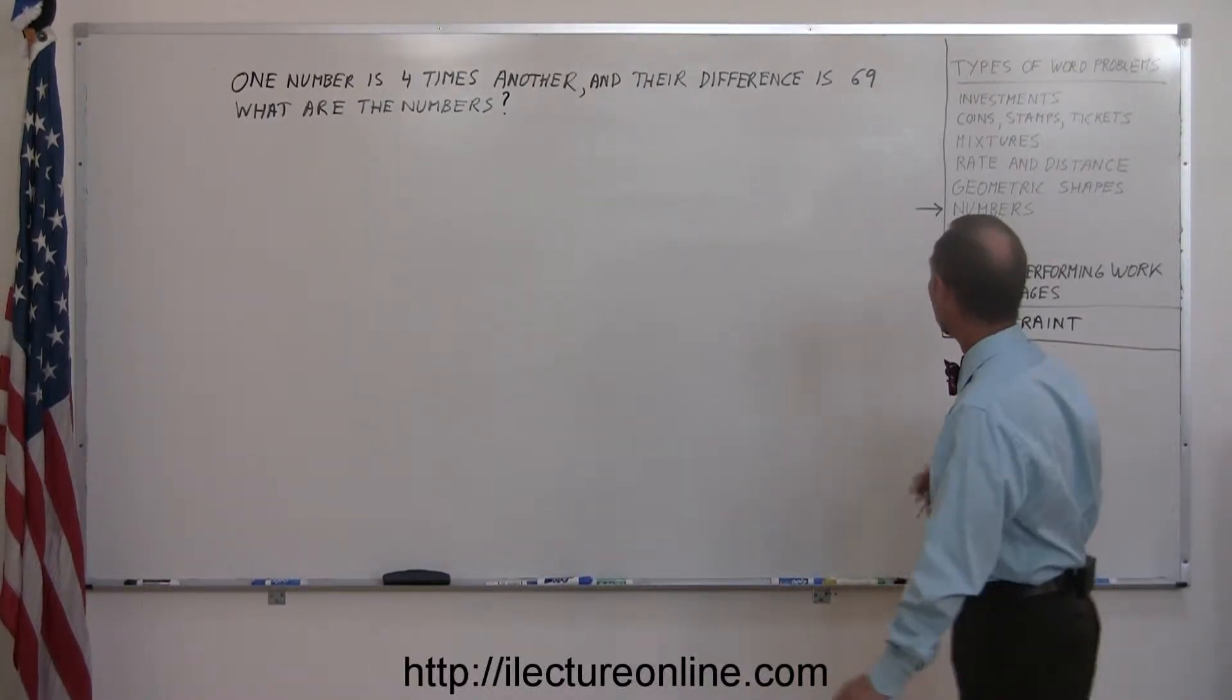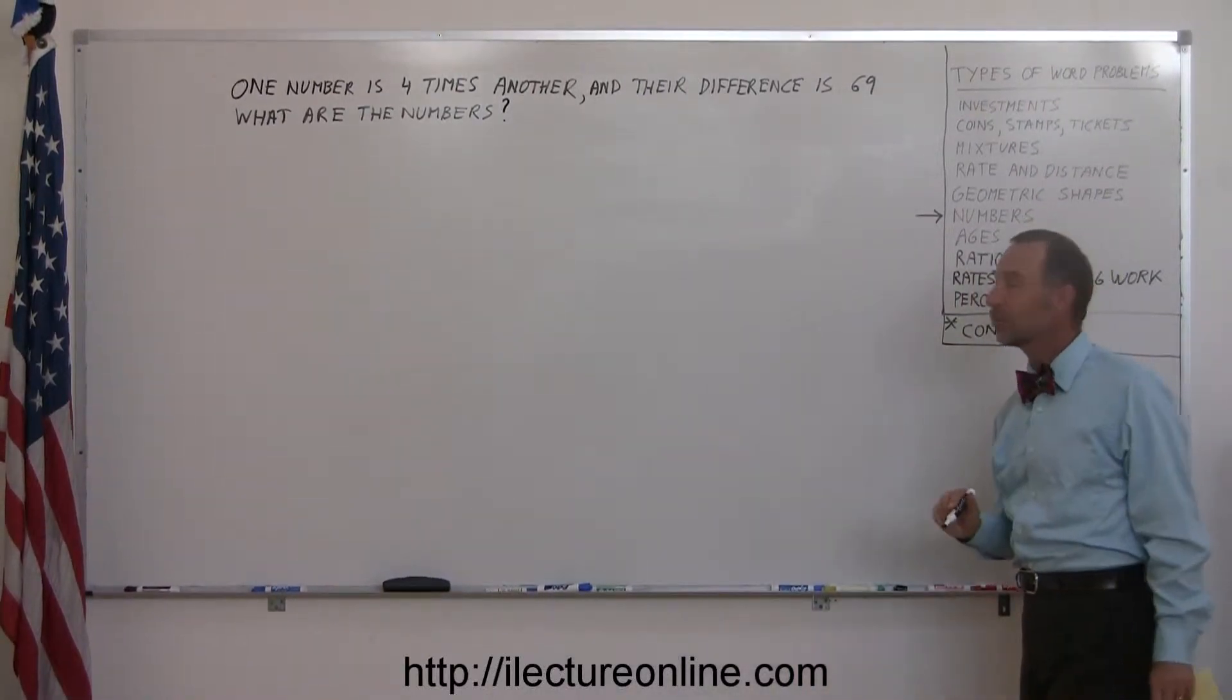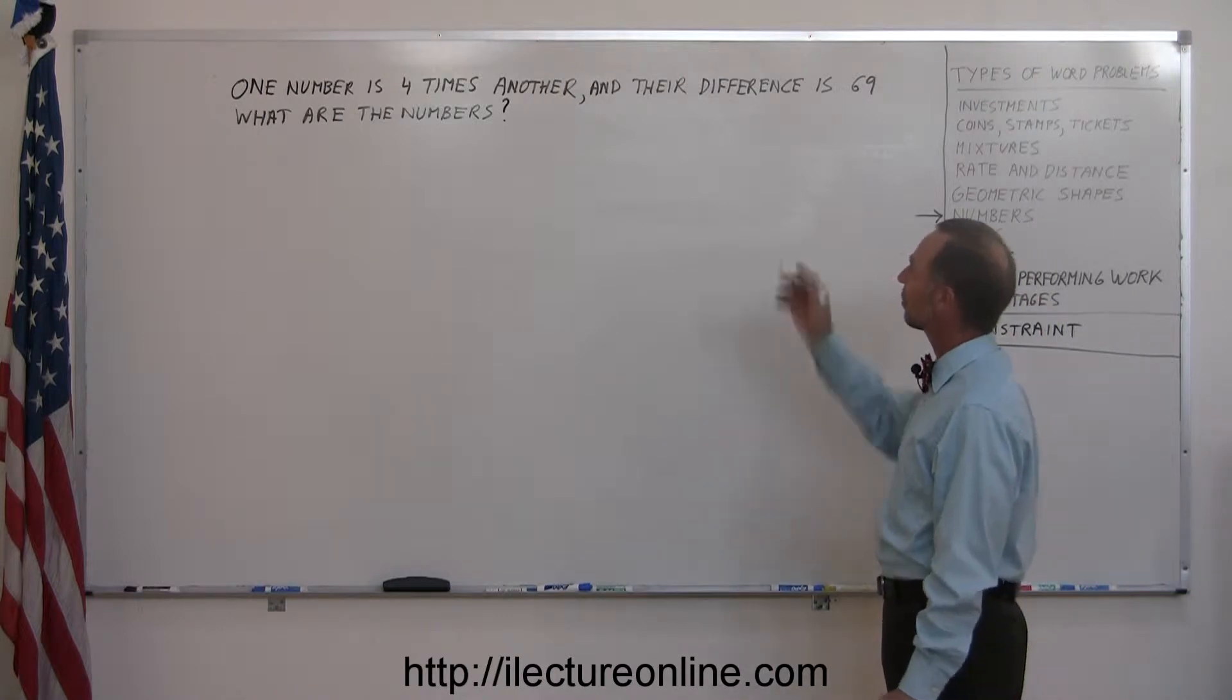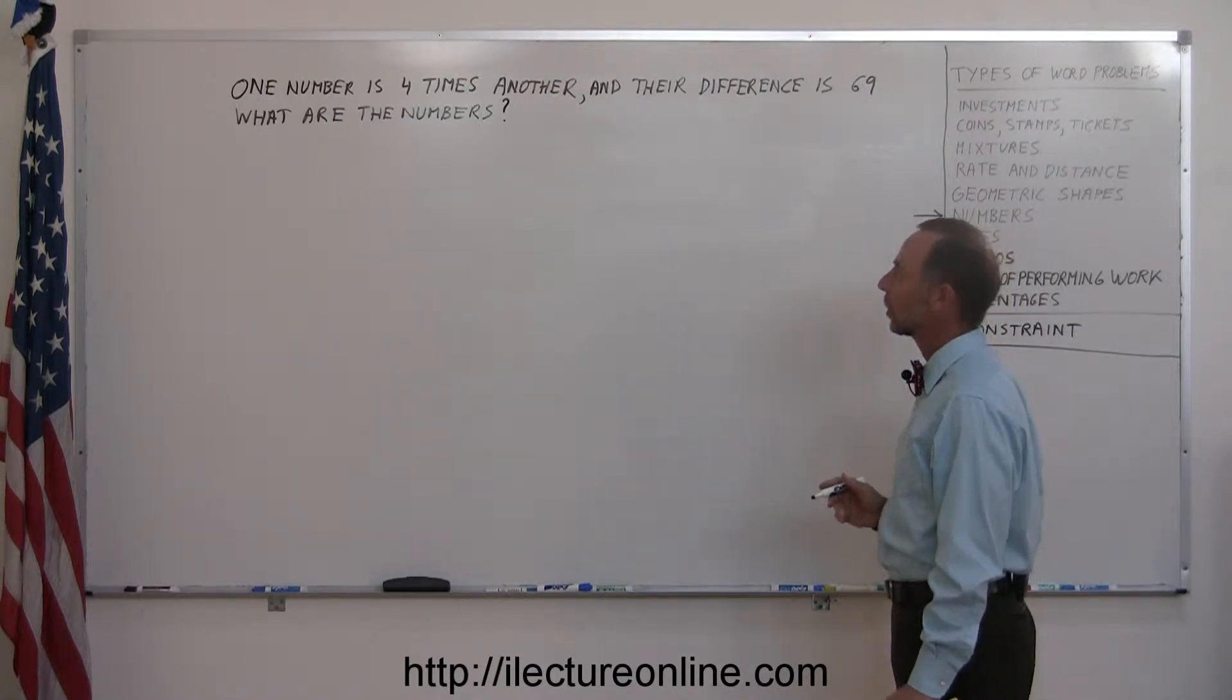All right, here's another problem. Again, it falls in the category of numbers. One number is four times another, and their difference is 69. What are the numbers?